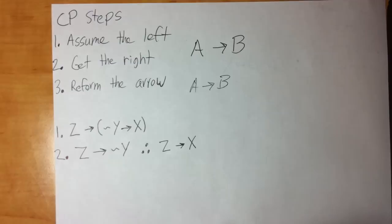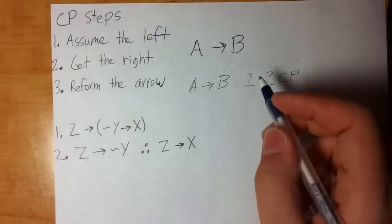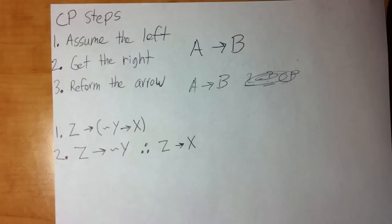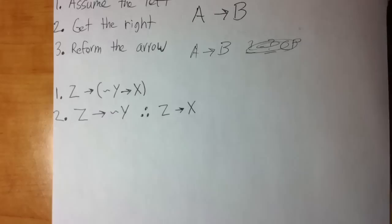Step three is reform the arrow. So you assume A, you get B, and then you can reform the arrow. You get to remake the arrow with a line number and note it as CP. That's essentially what CP looks like: assume the left side of the arrow, get the right side, then reform the arrow. It's easier shown than said, so keep those three steps in mind as we move forward.